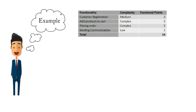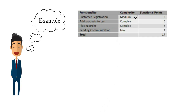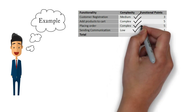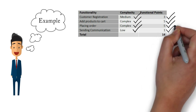We need to categorize these functionalities under the complexity buckets. In this example: customer registration has complexity medium, adding products to the cart is complex, placing the order is complex, and sending communication to the customer is low. The next step is to give the functional points based on complexity — customer registration gets 3, adding products to the cart gets 5, placing an order gets 5, and sending communication gets 1.